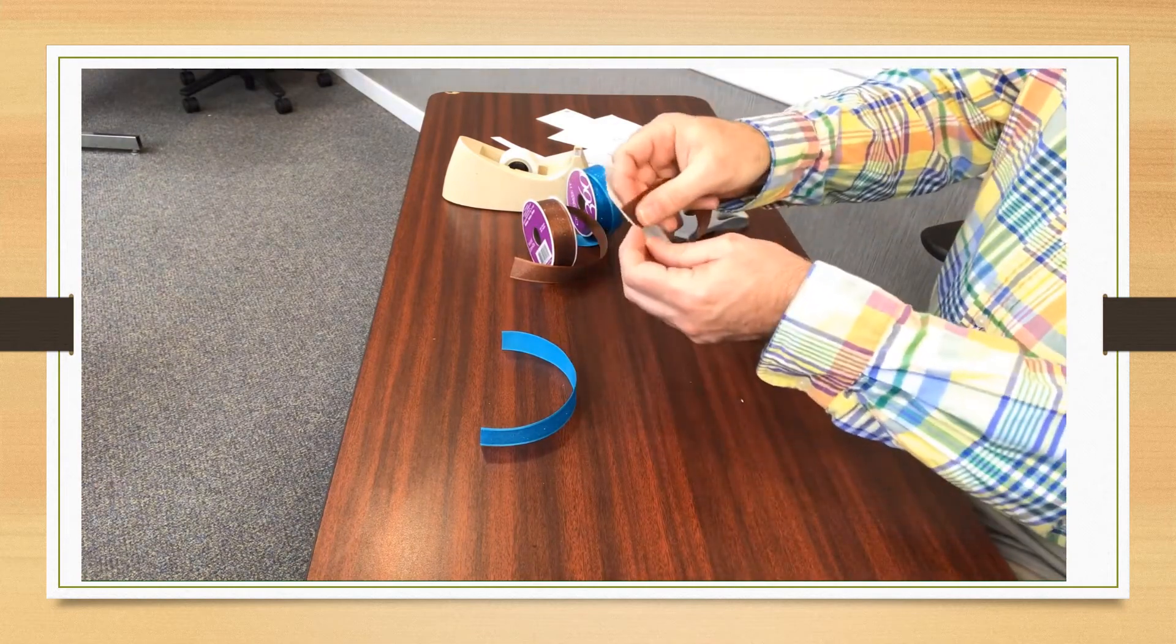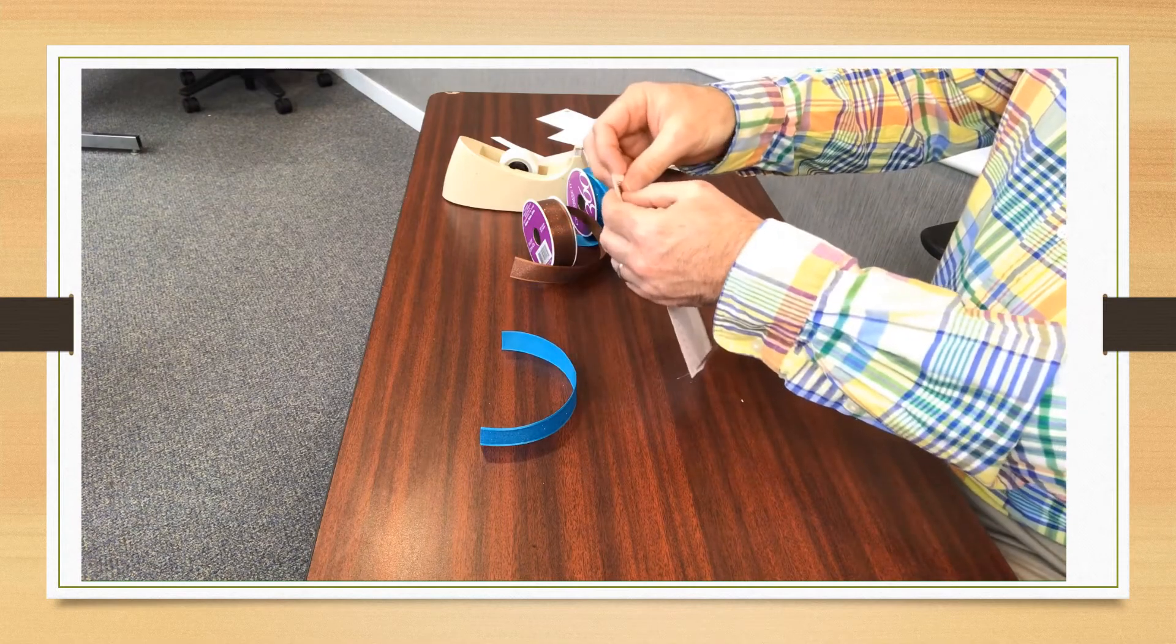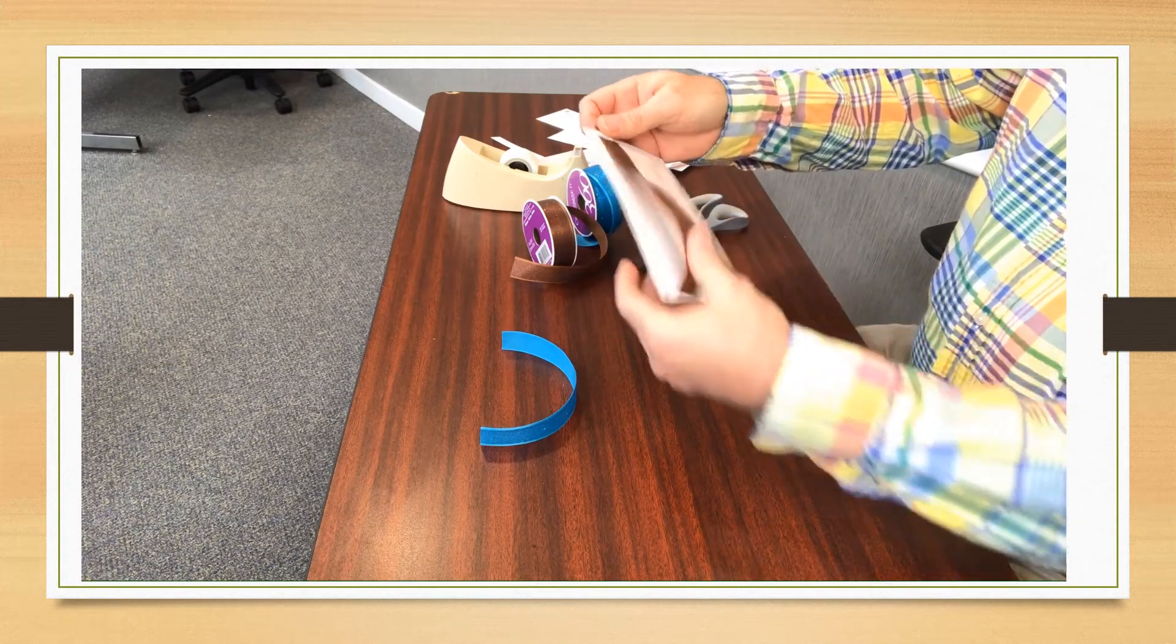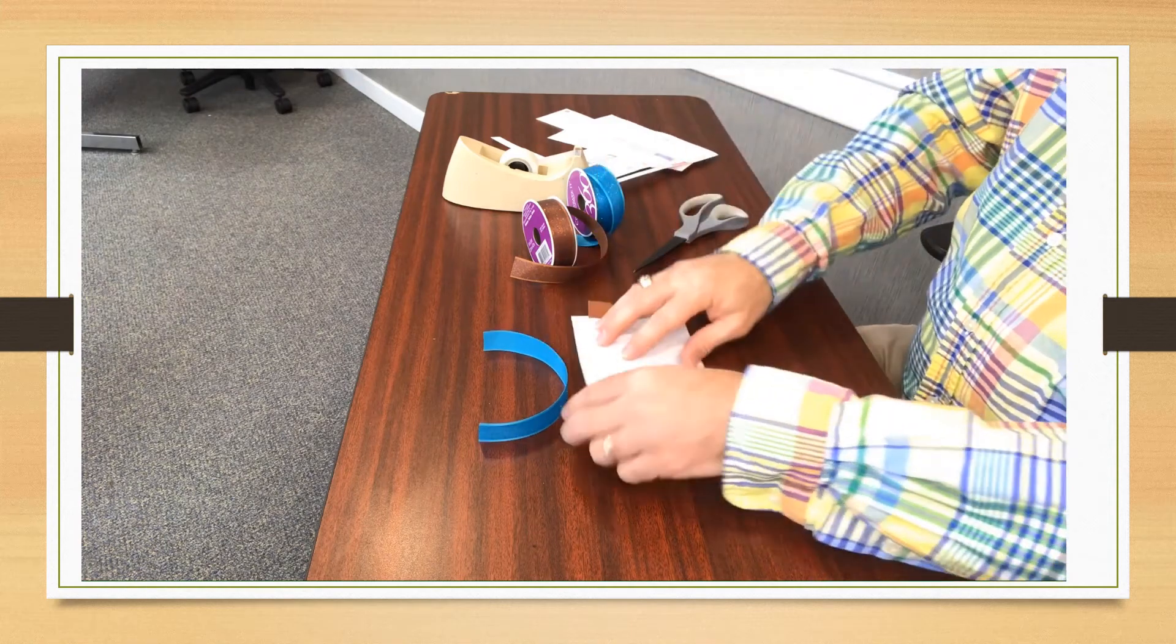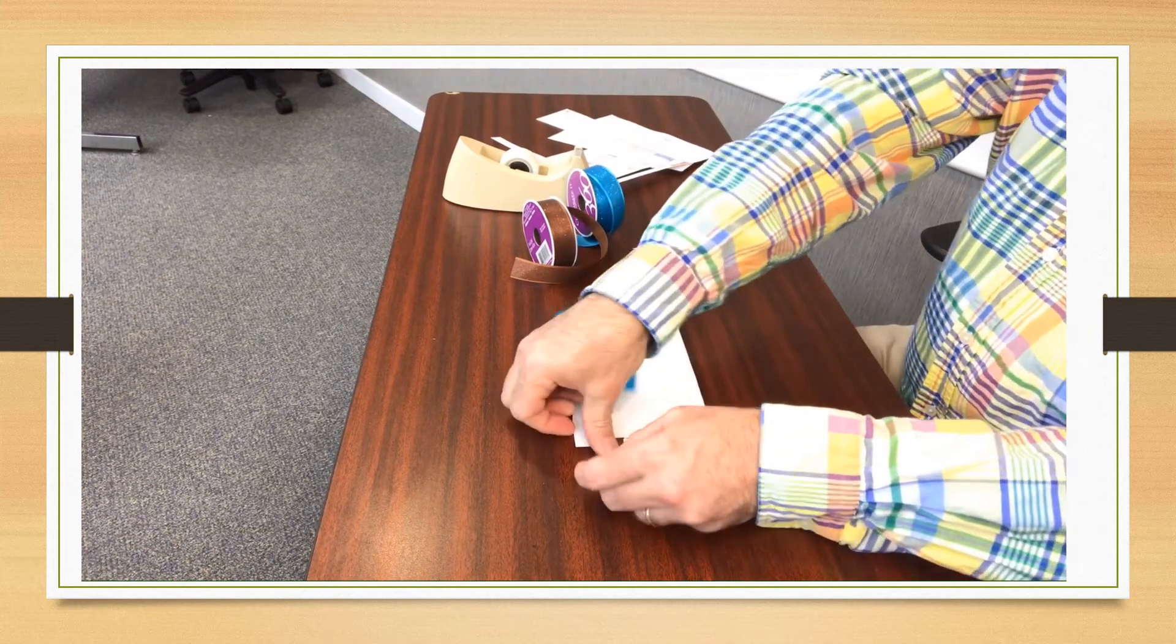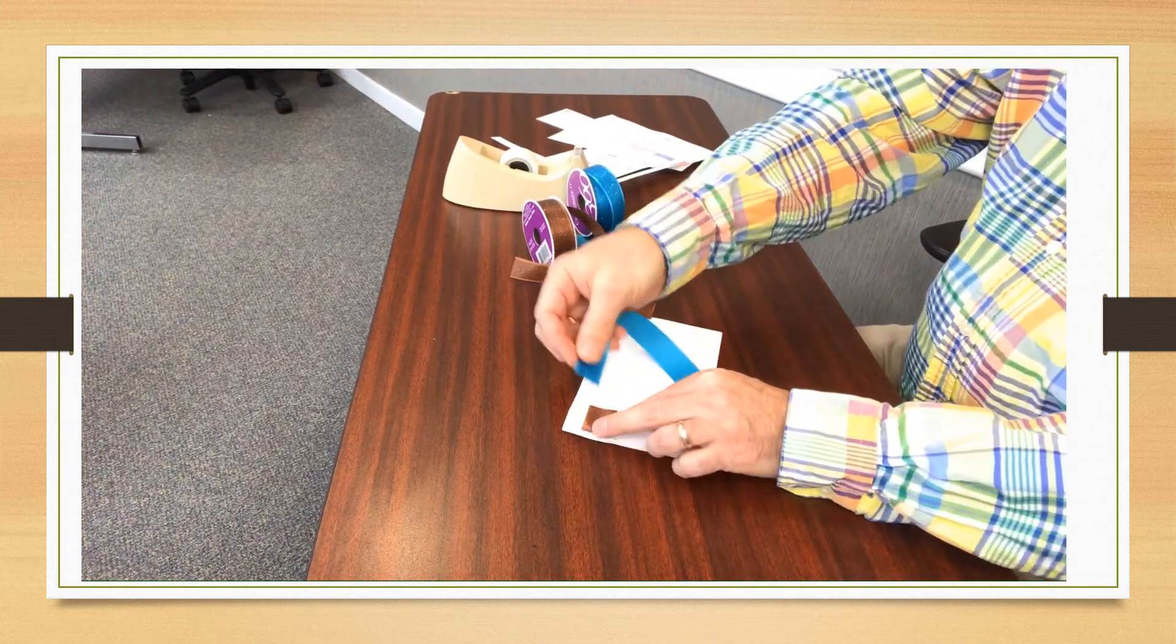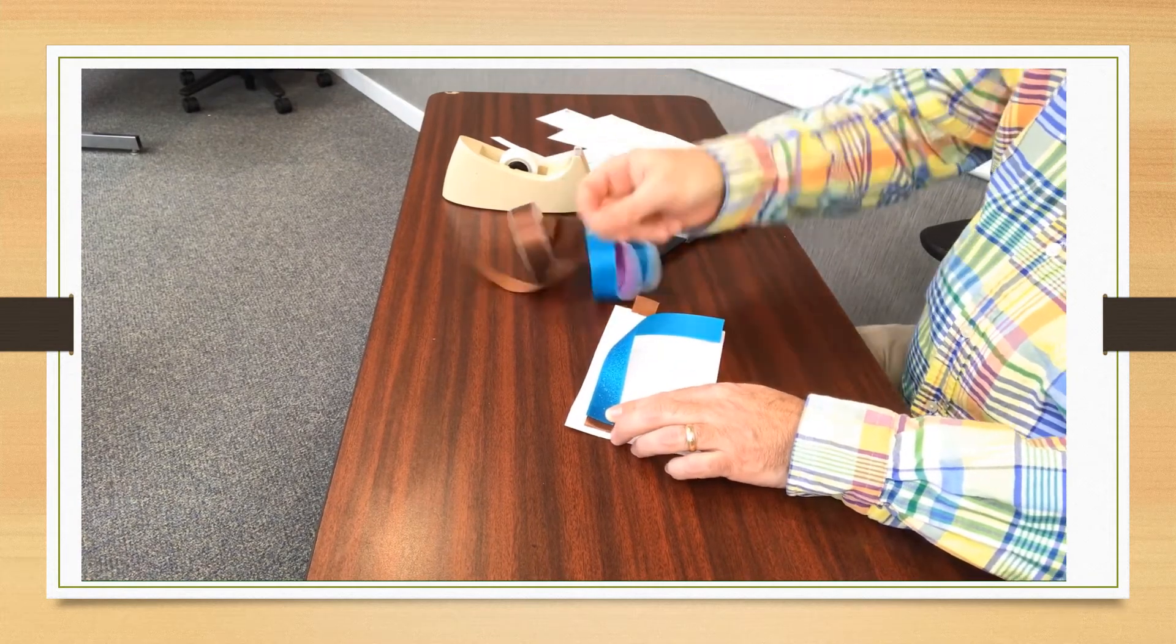Next we're going to place the ribbon through the slots on either end of our personal water meter. And turn it over and we're going to tape or glue the other piece of ribbon to it. We're going to tape on both sides to make it secure.